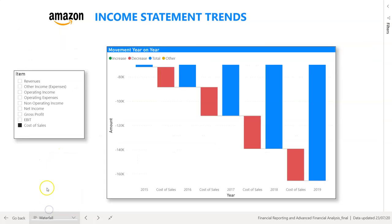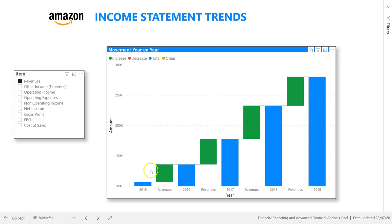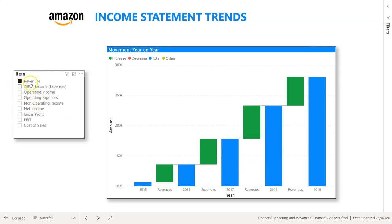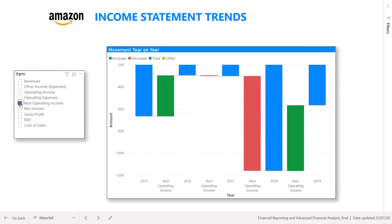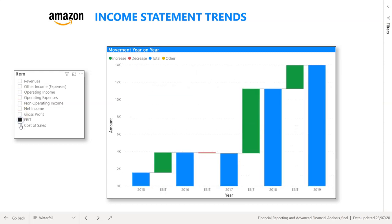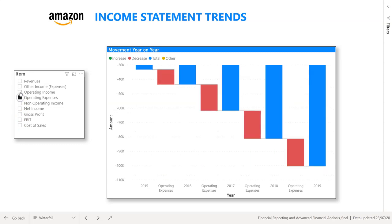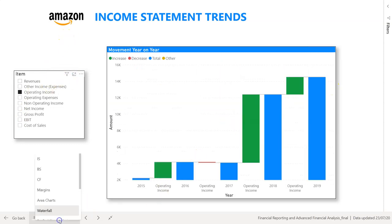After area charts, we do waterfall charts. Waterfall charts are a great visual to show movement year-on-year between different items — we've used income statement items in this example. For revenue, it shows each period's value and the cumulative movement. You can create a dynamic slicer so users can select the line items they want to see, giving great flexibility. That completes the introduction part of the course, where we teach you how to build the three-way financial statement model. We then move on to the ratio analysis dashboards.